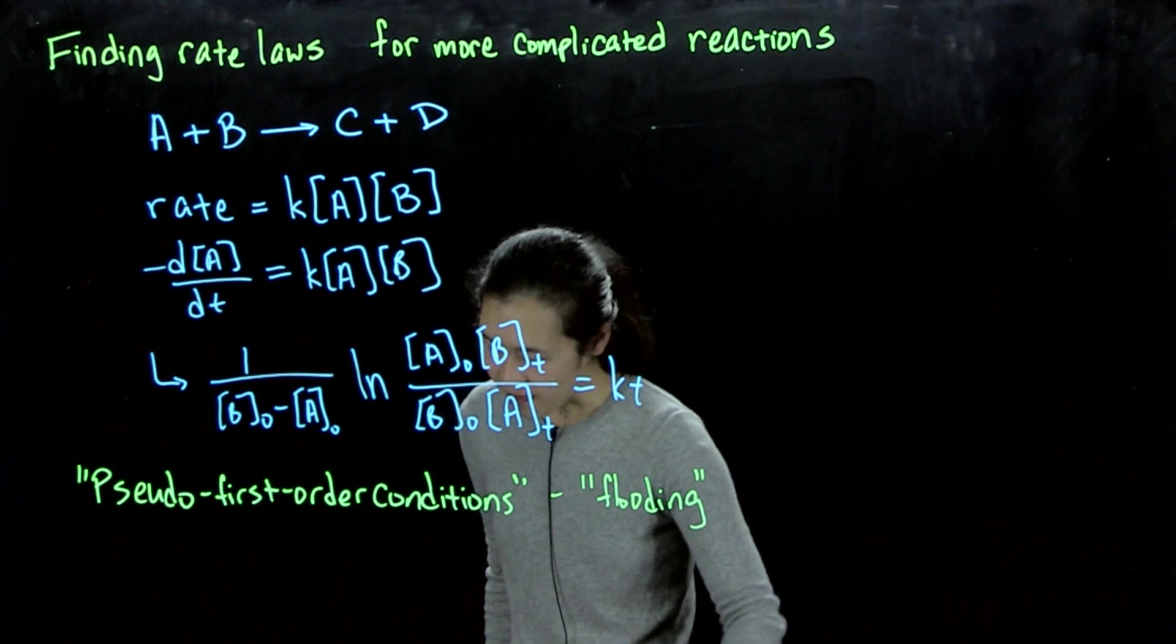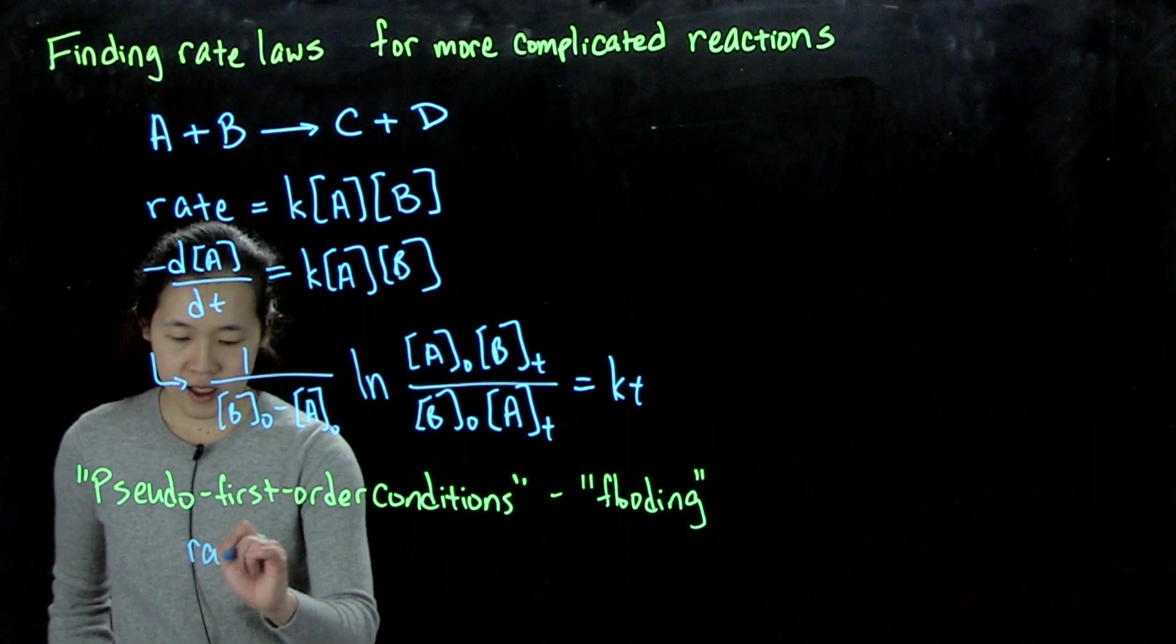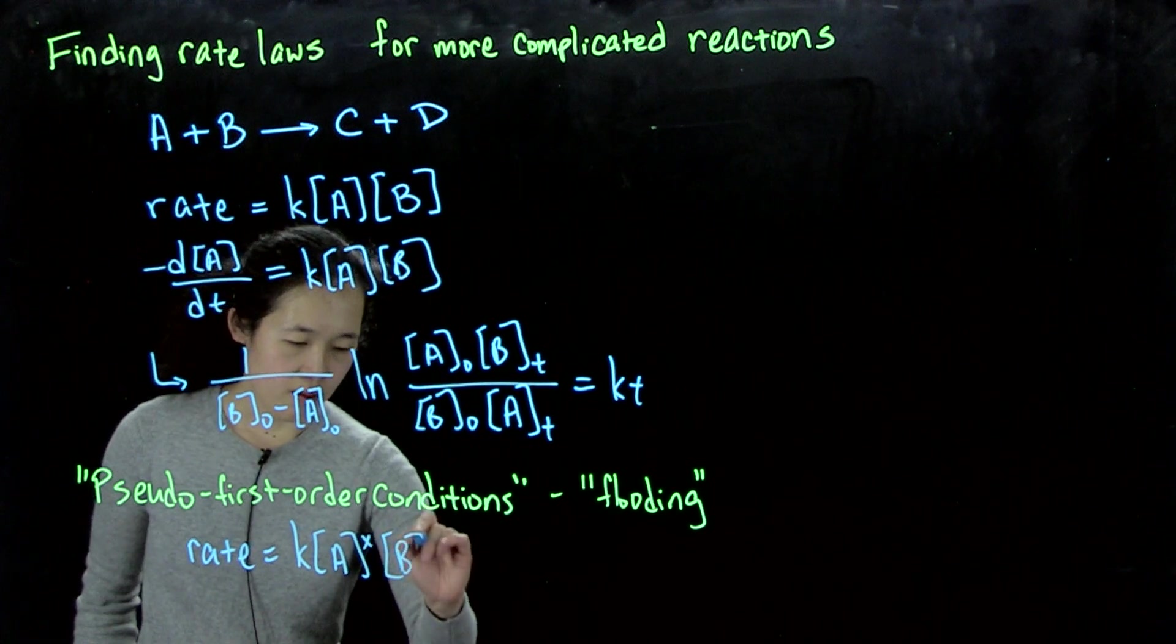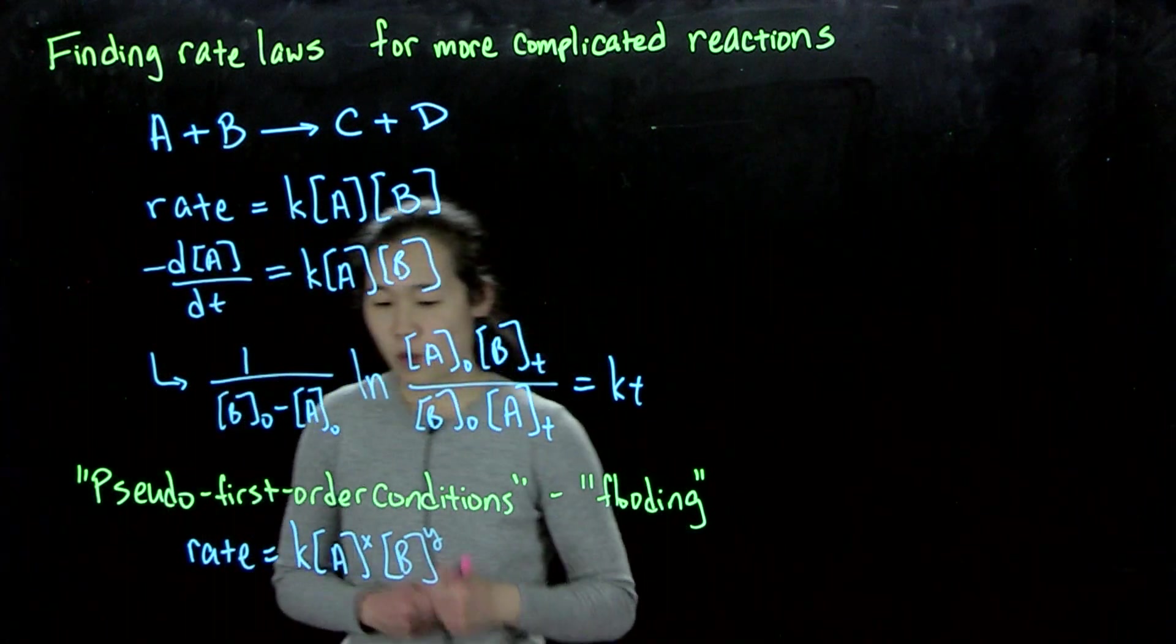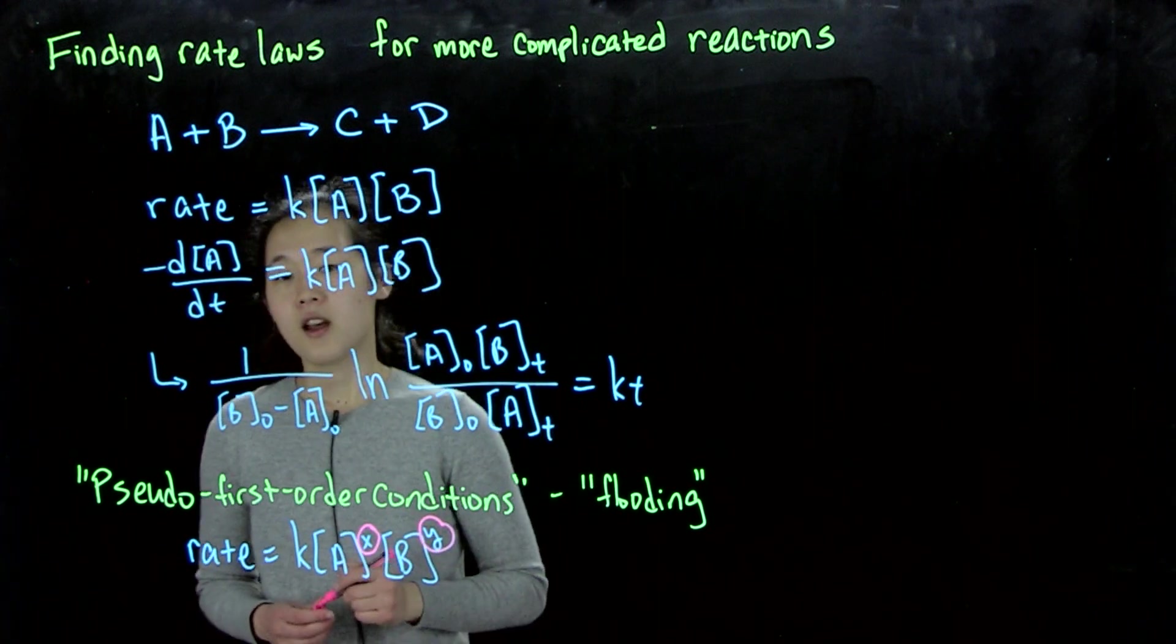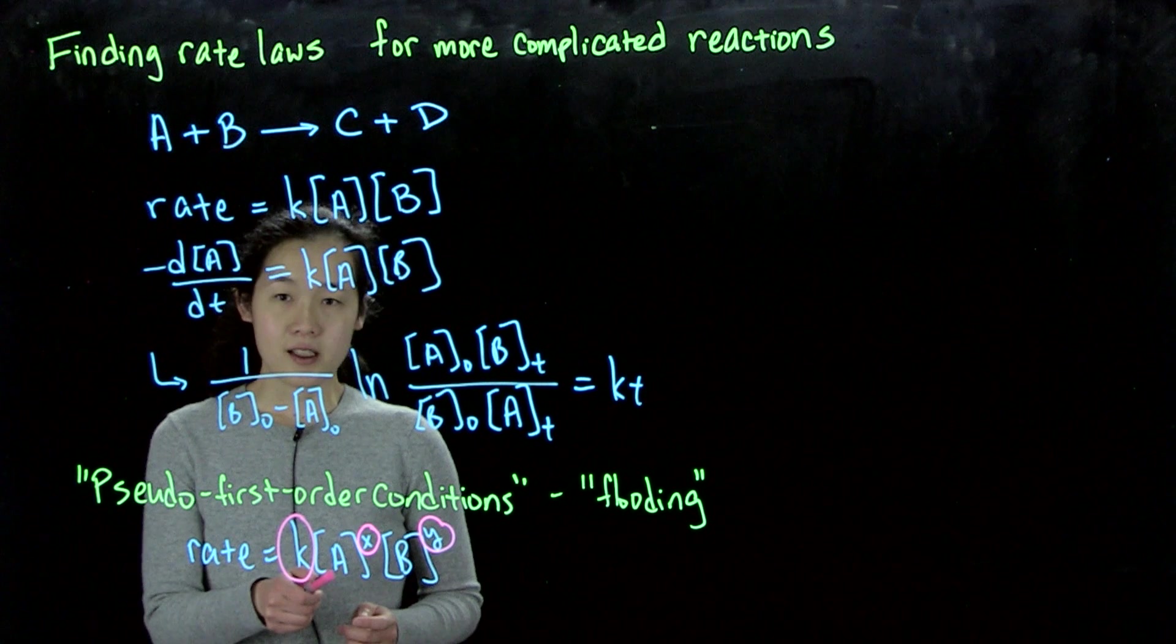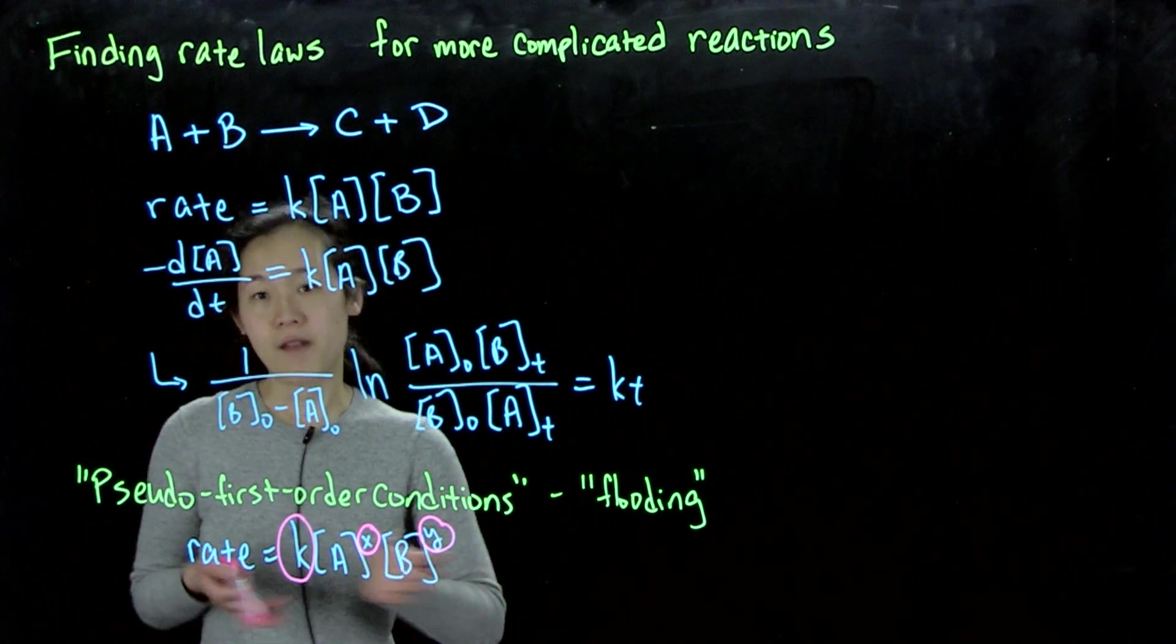So the idea is, in practice, if we have, let's say, a rate again, so we're trying to do rate equals two reagents, A to the x, B to the y. And our unknowns that we want to solve for is we want to solve for our order in A and B, as well as k, to get out our final rate law. It's not practical to try to fit a decay to some crazy expression every single time.